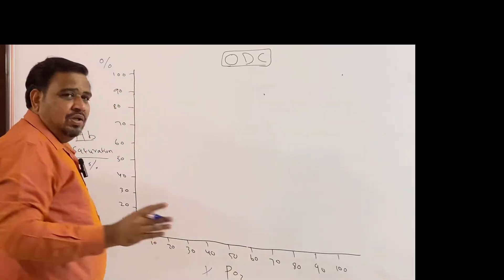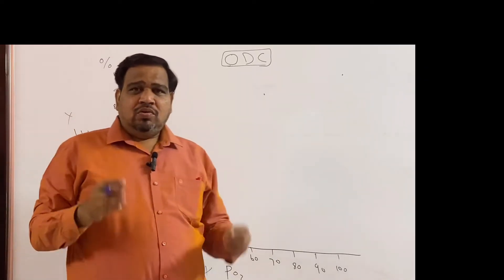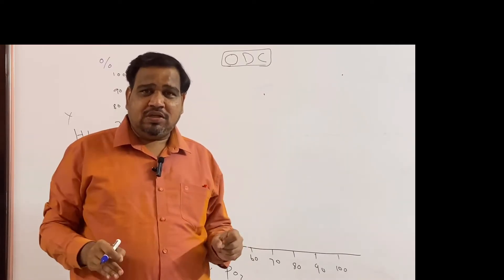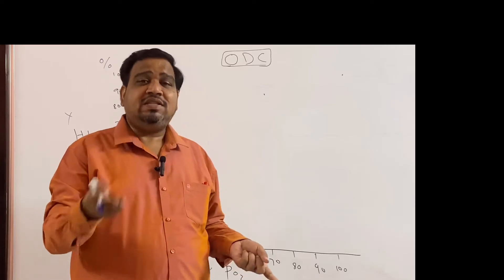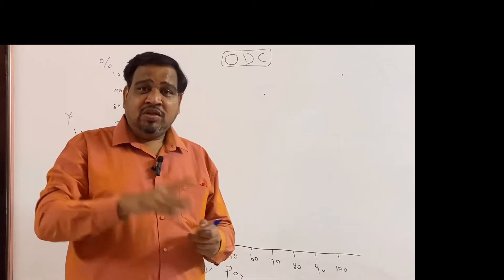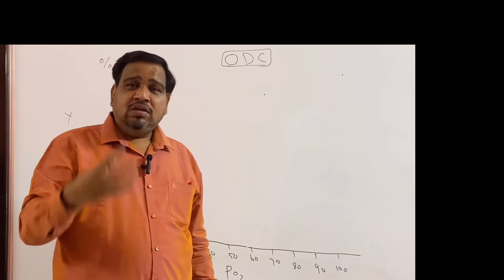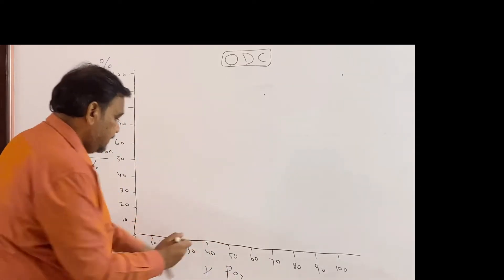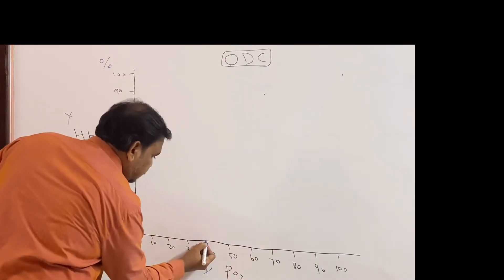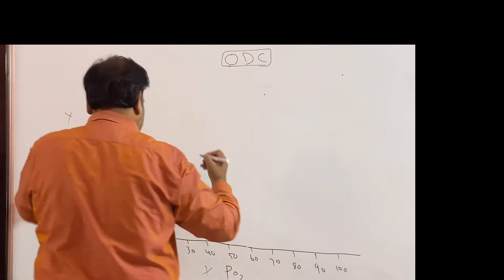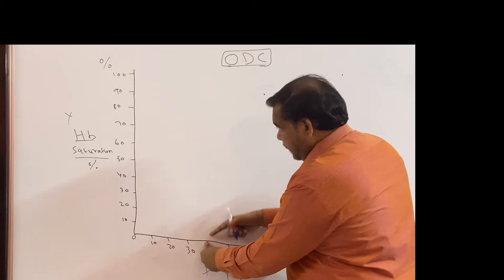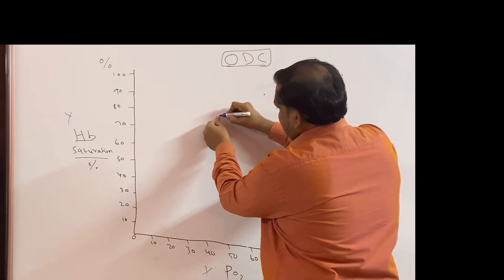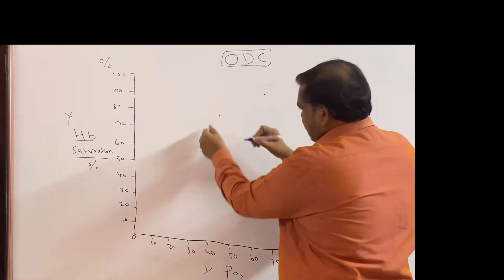Now, the tissue PO2 value is 40. At PO2 of 40, hemoglobin saturation is 75%. So even though PO2 has come down to 40, hemoglobin saturation is still 75%. We mark this point: PO2 40, saturation 75%.